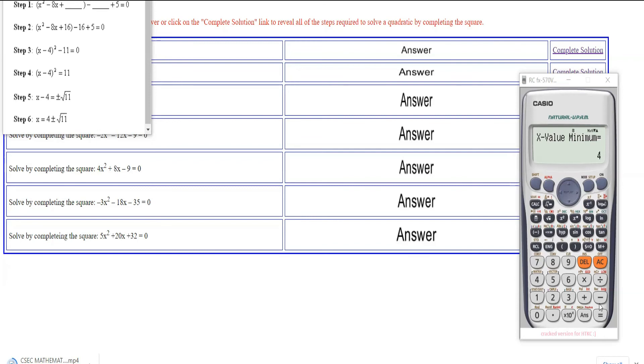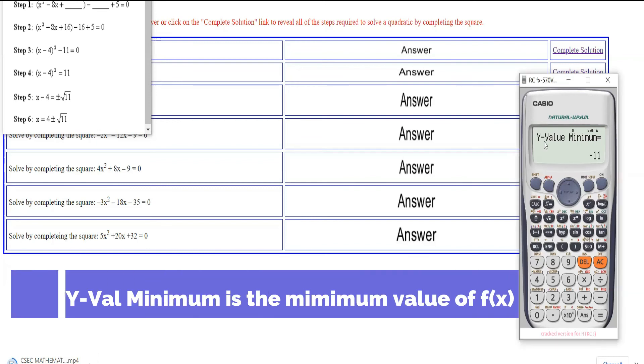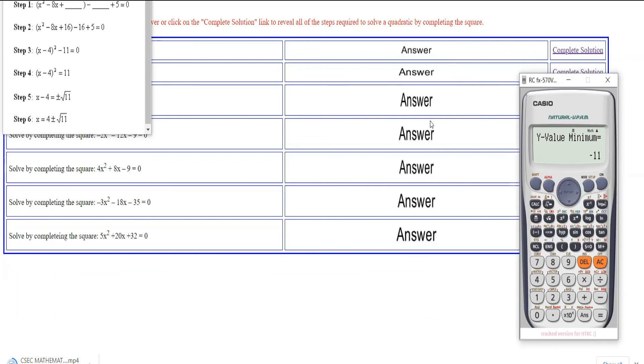And it will give you the minimum y-value, which is -11. That's really cool, right? -11.